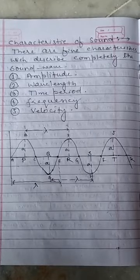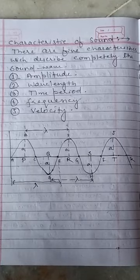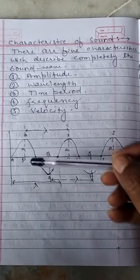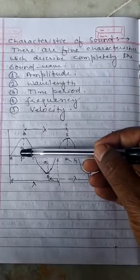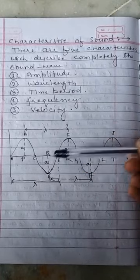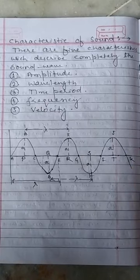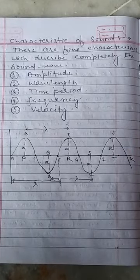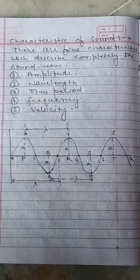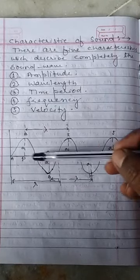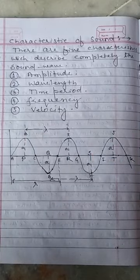Amplitude: the maximum displacement of a particle of the medium on either side of its mean position of the vibrating body is called the amplitude of the wave. It is denoted by small 'a' and its SI unit is meter.